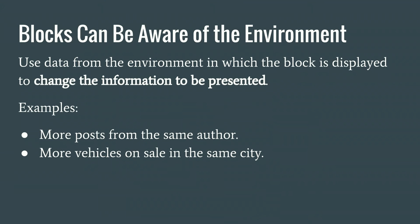Blocks can also be aware of their environment. A block can use data from the node or page it is displaying on to change the data it shows. For example, if we show 'more articles by the same author,' the block says: I am in this node, this node is of type article, and this node was created by Mauricio — so I'm going to load more articles created by Mauricio. If you go to an article written by Juan, it will change to articles by Juan.